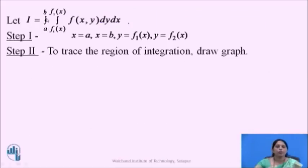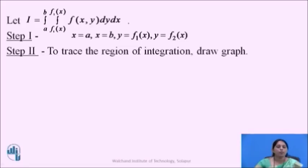Let I equals to integration from a to b, integration from f1 of x to f2 of x, f of x y dy dx be the given integral. Observing the limits of the integral, the inner integral has the limits expressed as functions of x, so these are the limits of y — y varies from f1 of x to f2 of x. The outer integral has the limits of x from a to b. So we can write that x equals to a, x equals to b, y equals to f1 of x, and y equals to f2 of x are the four curves which bound the region of integration.